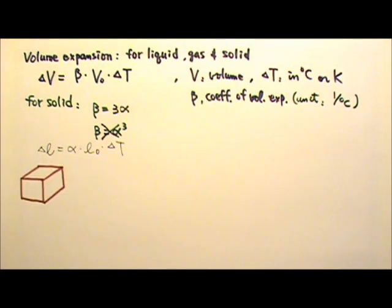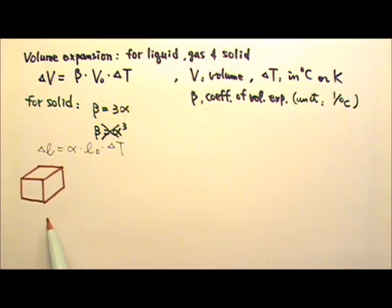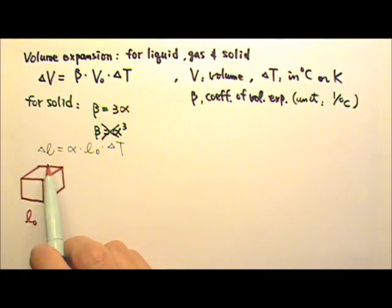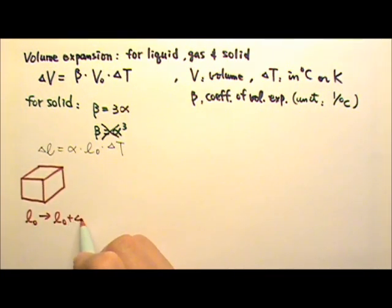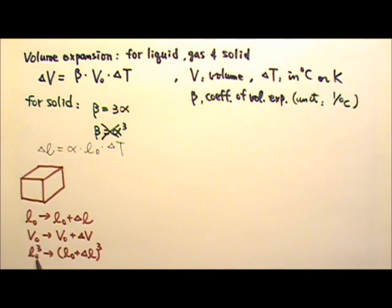I will now quickly go over why beta is three times alpha. Let's consider a solid in the shape of a cube. Each side of the cube is L0, and when temperature goes up by delta T, the side expands by delta L and becomes L0 plus delta L. The original volume V0 expands to V0 plus delta V, and V0 equals L0 cubed.